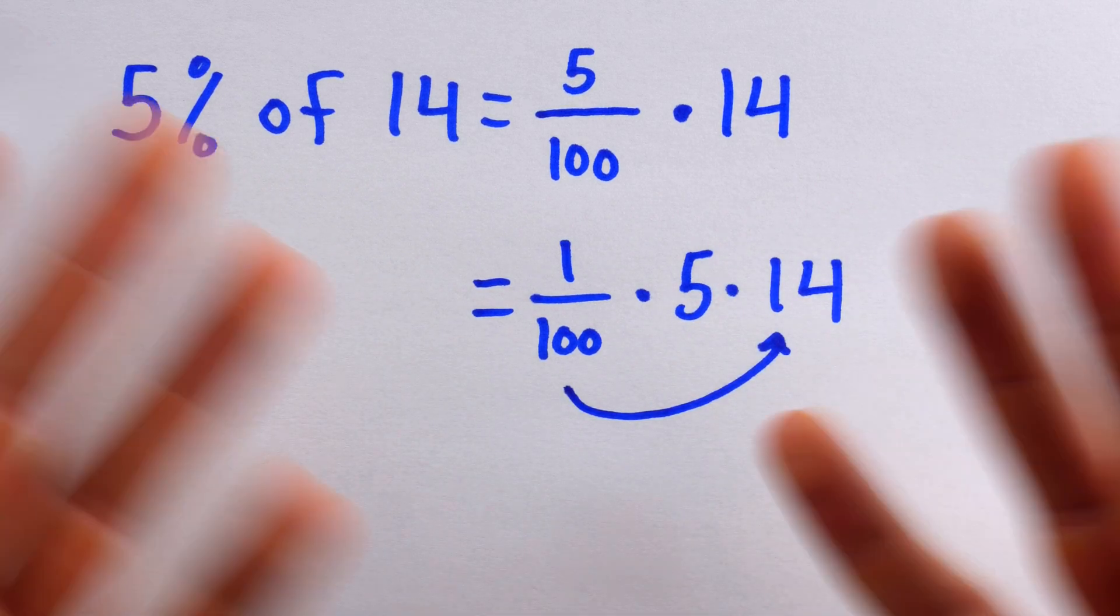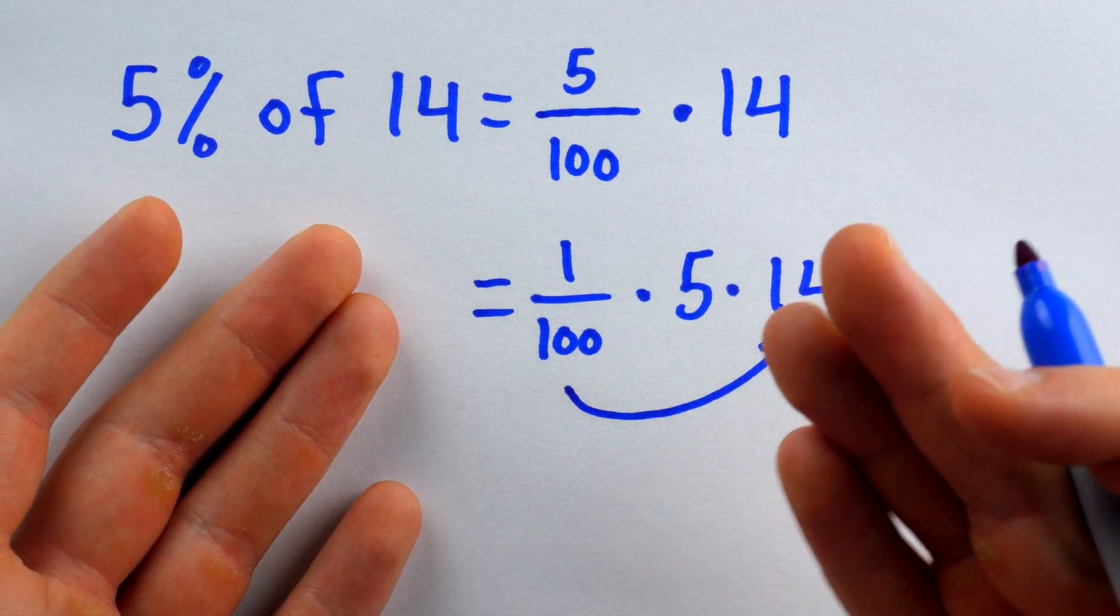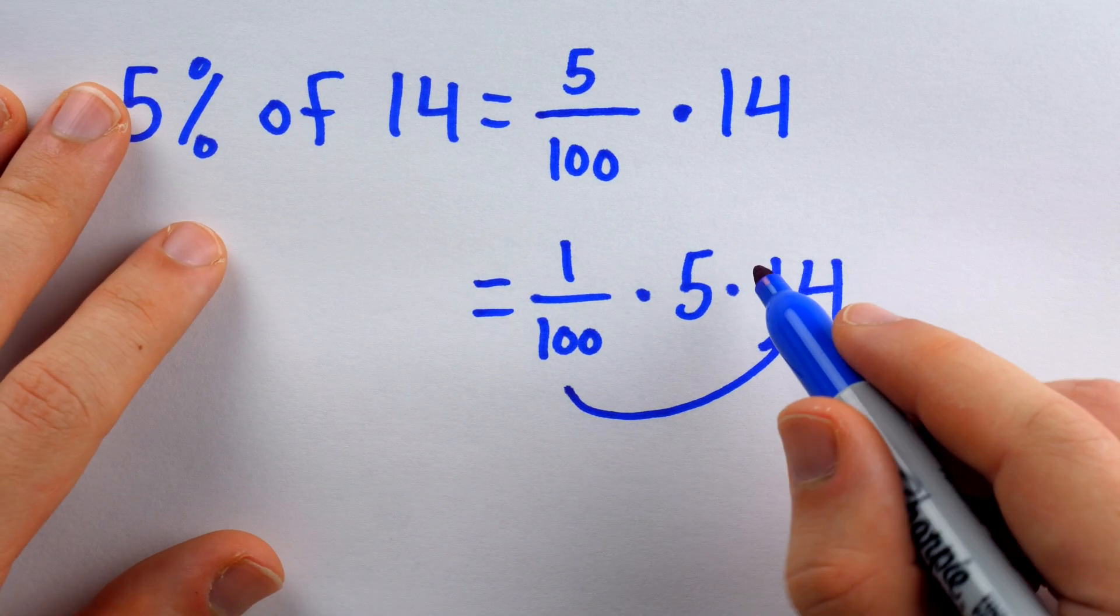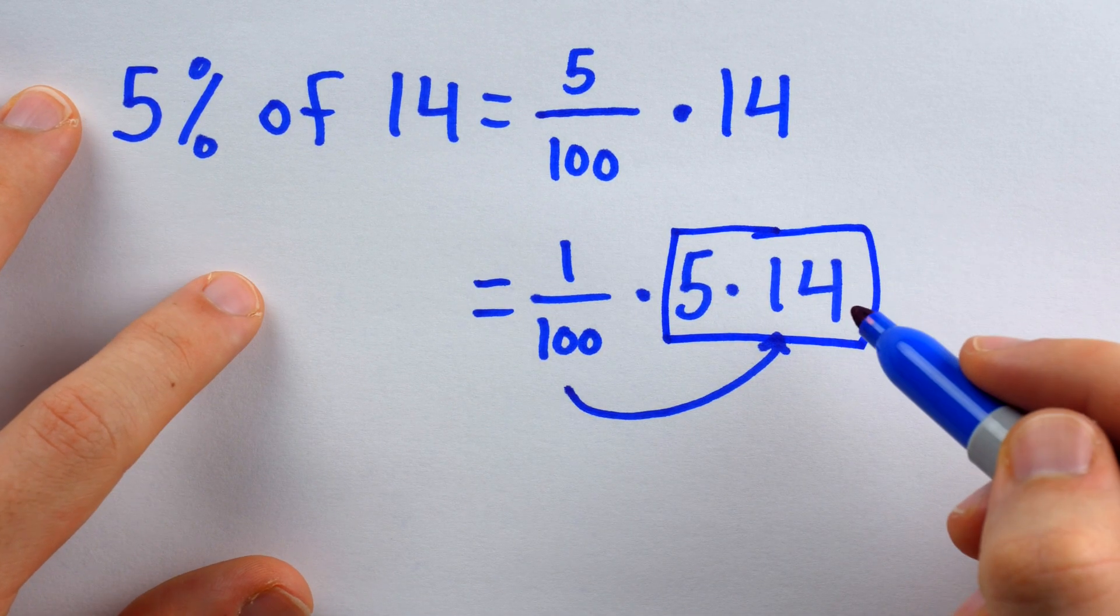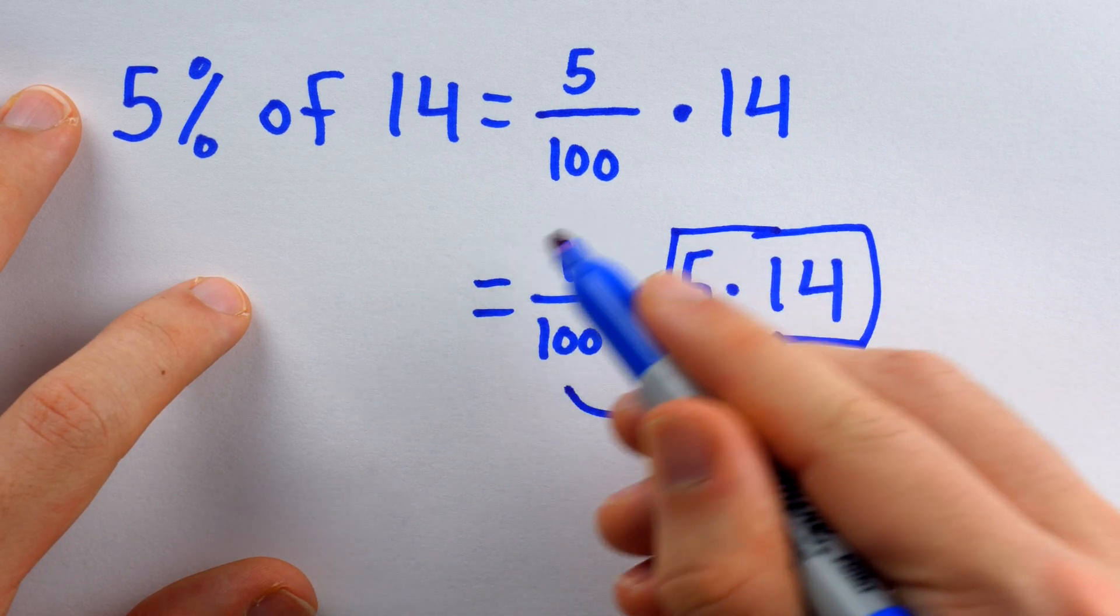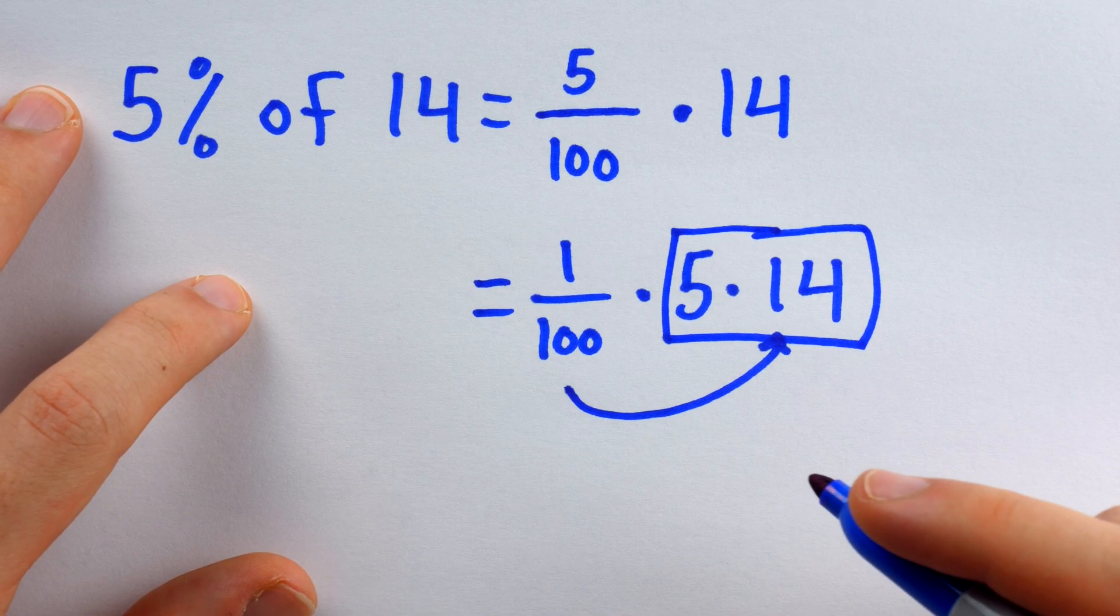But like we said, neither of these percentages are super intuitive to us. Instead, notice what we can also do is just simple multiplication. 5 times 14, and then whatever that is will be over 100. That will be our percent.